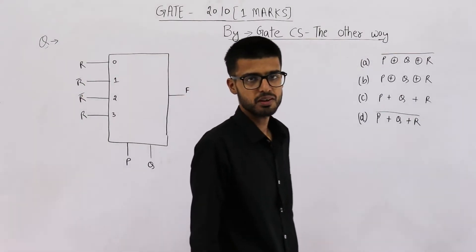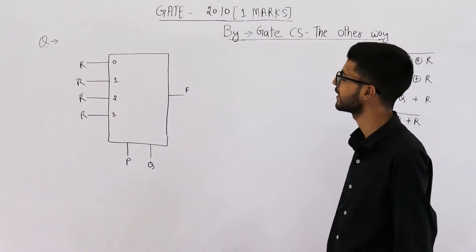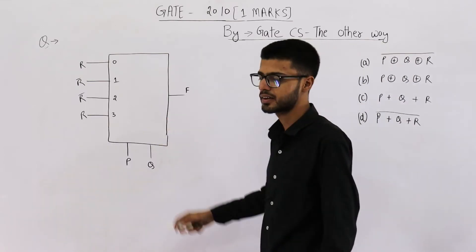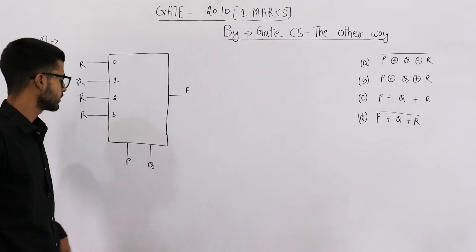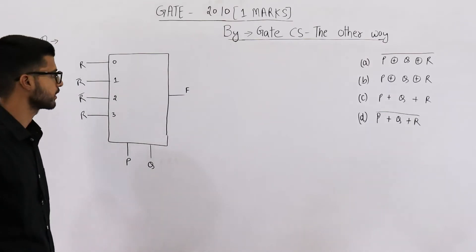Hello students, welcome back. This one more question is from Gate 2010 exam. We are required to find the output of this multiplexer. Now you see, select lines of this multiplexer are p and q.